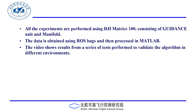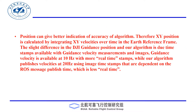The blue curve shows our results while the red curve shows Guidance results. Position is an intuitive measure for algorithm accuracy, so XY position is calculated by integrating XY velocities over time in the earth reference frame. The slight difference in DJI Guidance position versus our algorithm is due to timestamps: Guidance velocity is available at 10 Hz with more real-time timestamps, while our algorithm publishes velocities at 20 Hz using image timestamps dependent on ROS message publish time, which is a less real-time process.